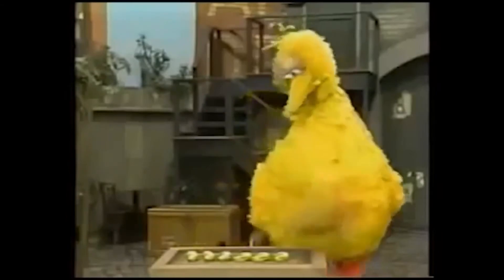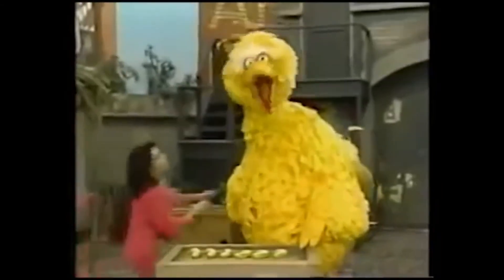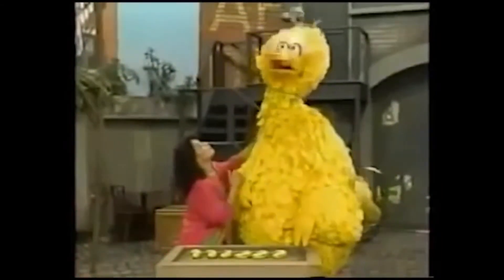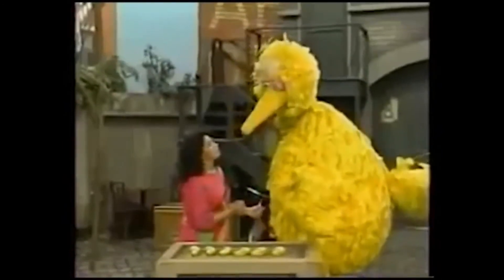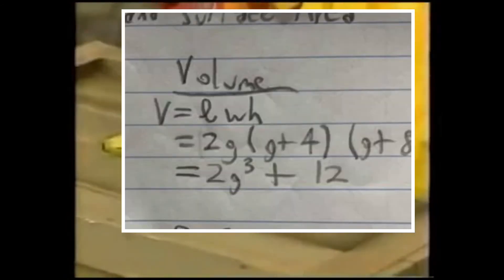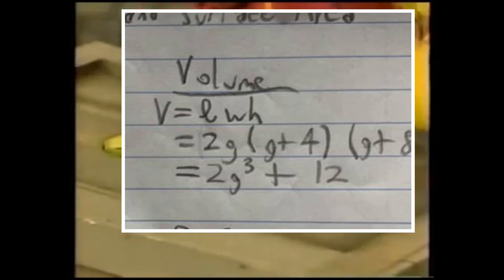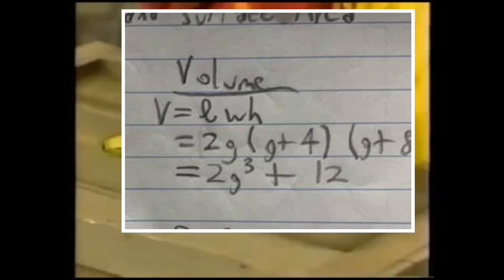I can't do it! Big Bird, let me help you, okay? G plus 8 is the height. G plus 4, 2G is the length. I use the formula: 2G times G plus 4 times G plus 8. And I get 2G cubed plus 12.